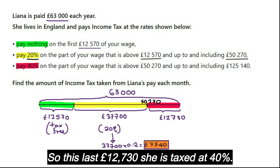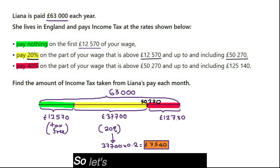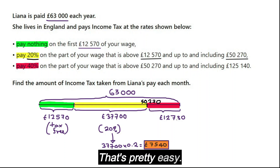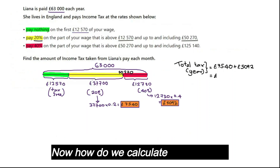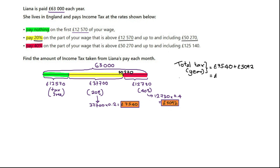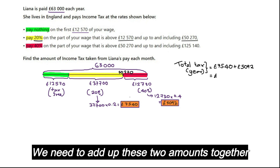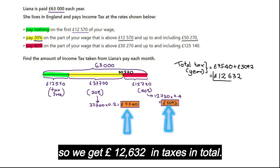That amount is £63,000 take away £50,270, so this last £12,730 is taxed at 40%. That comes to £5,092 in taxes. To calculate the total tax, we add the two amounts together: £7,540 plus £5,092 gives £12,632 in taxes in total.